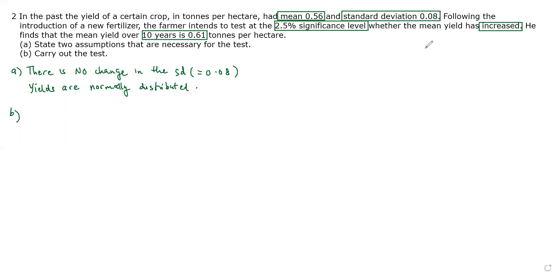Part B, to carry out the test whether the mean yield has increased, we need to let μ be the population mean yield. We state the null hypothesis that the mean was originally 0.56 against the alternative hypothesis that the mean has increased. So the mean has increased indicates that the mean must be greater than 0.56. We have a one-tail test here.